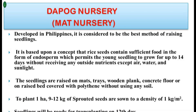The seedlings are raised on mats, trays, wooden planks, concrete floor, or on raised beds covered with polythene, without using soil. In the Dapog method, seedlings can be raised on mats, trays, wooden planks, or concrete floor without using soil.